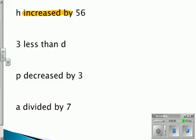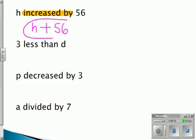First thing we're going to look at right here is the words increased by. Increased by means to add, so we're going to put an addition sign down. Since h comes before the words increased by, we're going to put h before the plus sign, and 56 comes afterwards, so we're going to put h plus 56, and that's your answer.